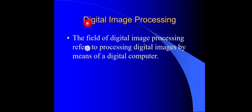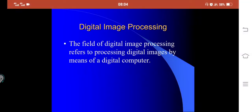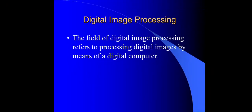A digital image is nothing more than a two-dimensional signal, which is a function f(x, y), where x is the horizontal and y is the vertical coordinate.